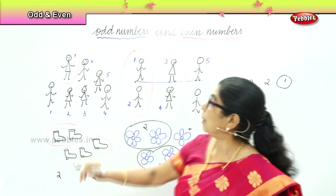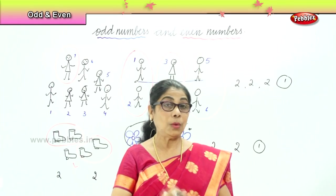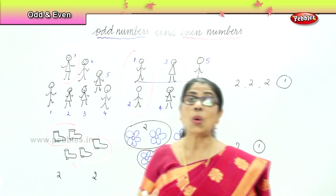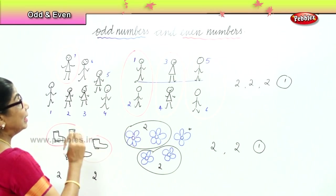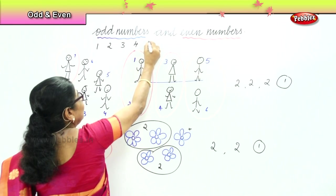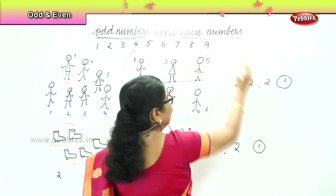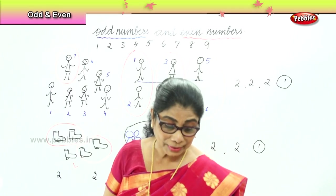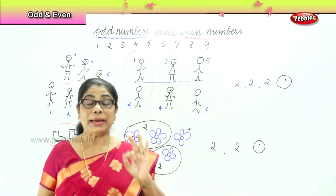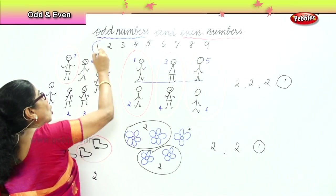Now, what are we talking about? Odd numbers and even numbers. When a number stands by itself without a partner, then we say it's an odd number. Let us look at numbers one to nine. Now, number one stands by itself — it doesn't have a partner — and we call number one an odd number.